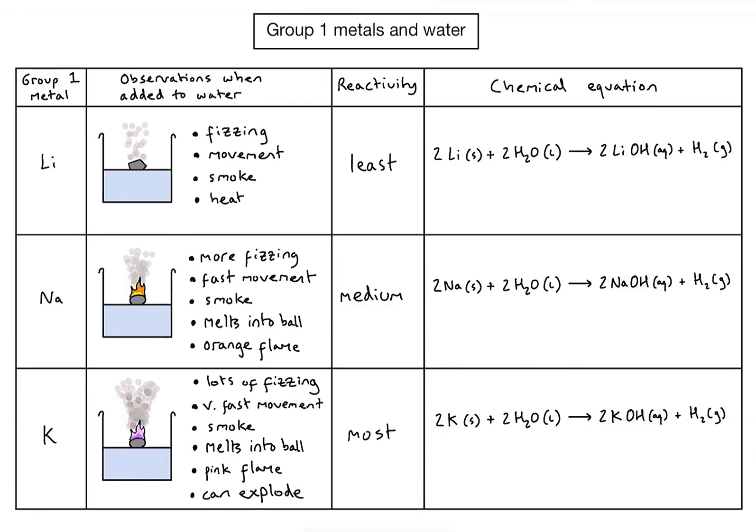Now, before we try and explain why it gets more reactive going down the group, it's worth identifying exactly what happens to my group 1 metal in the chemical equation. Because we're starting with solid lithium on the left-hand side, we have lots of lithium atoms. And on the right-hand side, in lithium hydroxide, we've now formed a positive lithium ion, which is paired with hydroxide ions to form the lithium hydroxide. So simplifying or focusing on just that process, my lithium atoms are each losing one electron to become lithium ions. The same happens to sodium and the same again happens to potassium.